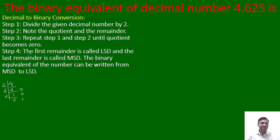Step 4 says the first remainder is called the least significant digit and the last remainder is called the most significant digit. The binary equivalent can be written from MSD to LSD, which means we write it from bottom to top. So 4 base 10 is equal to 100 base 2.